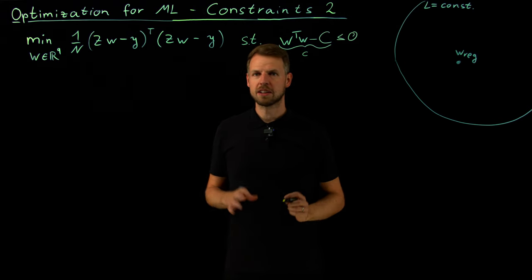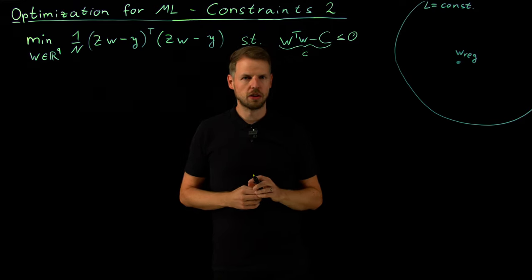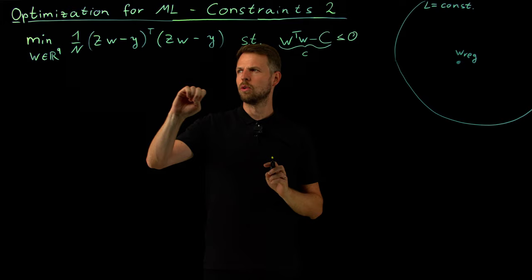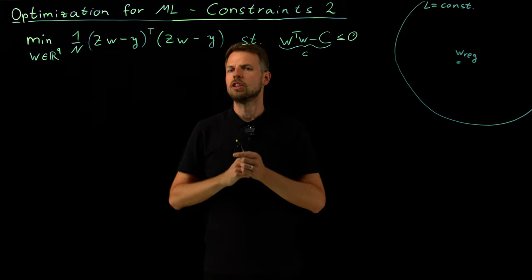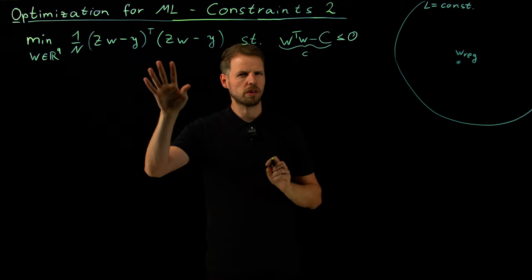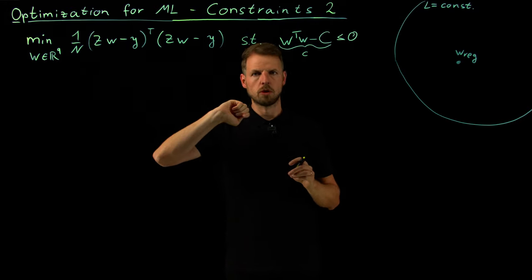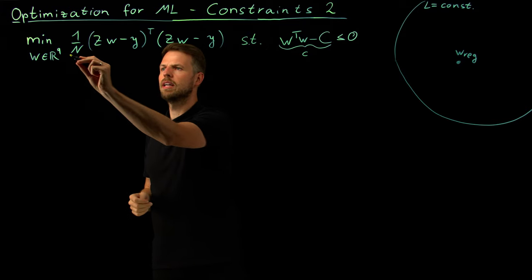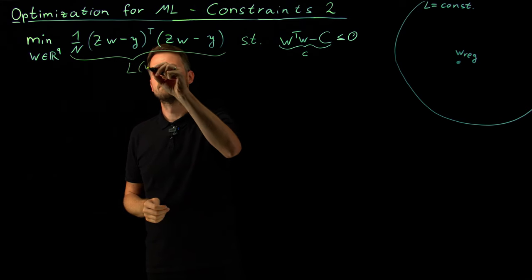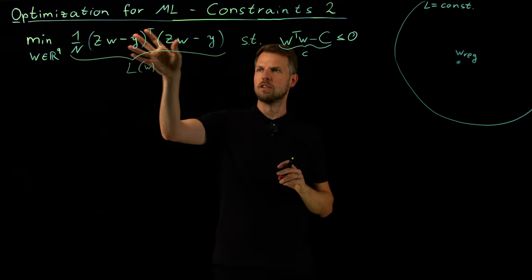Hello everyone. Welcome back to part number two on constraints in this optimization for machine learning lecture series. We stopped in the last video with this definition of a problem with an equality constraint. I'm going to use this because it's very intuitive, the linear model once more, but we saw also that this can be a general nonlinear loss function. For the purpose of this video, it doesn't really matter. This one is just very intuitive because it's all circles in the loss function landscape.